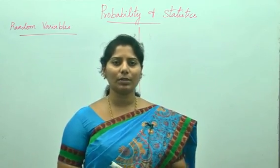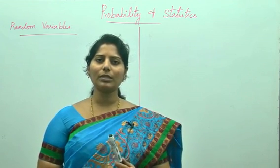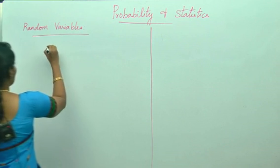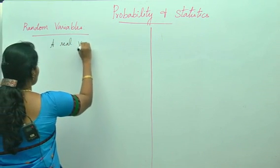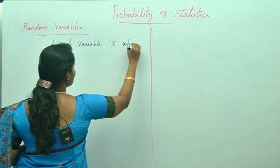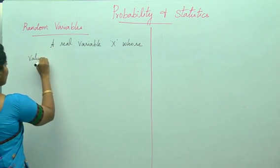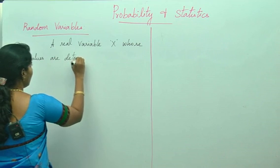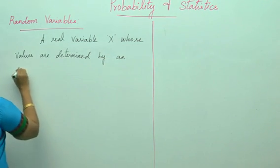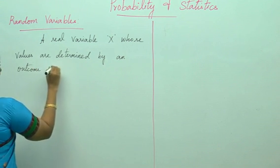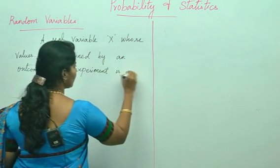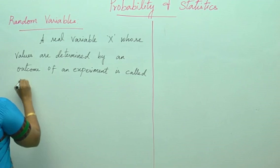Now I am going to teach you random variables. A real variable x whose values are determined by the outcome of an experiment is called a random variable.